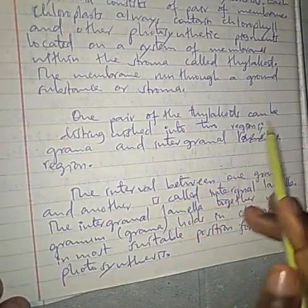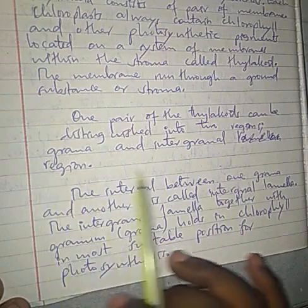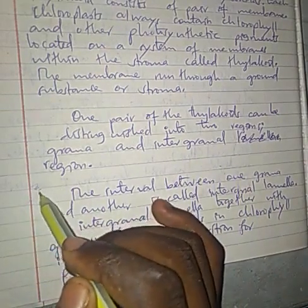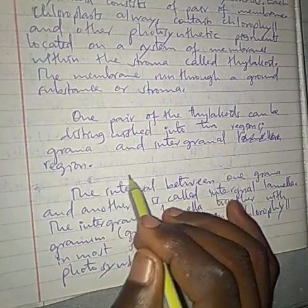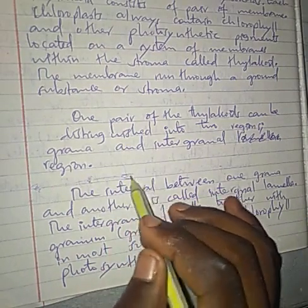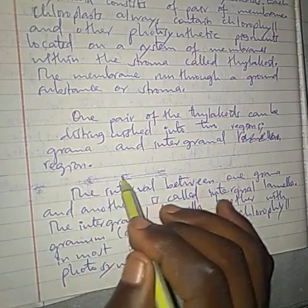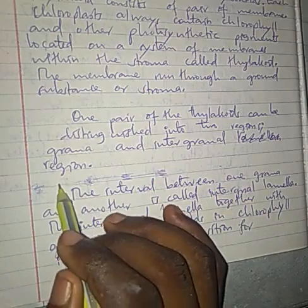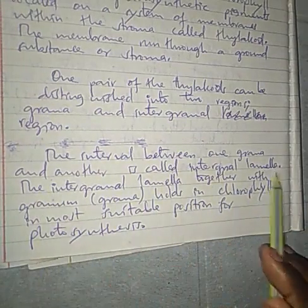One pair of thylakoids can be distinguished into two regions: the grana region and the inter-granal region. Grana is just like an accumulation of thylakoids. The inter-granal region is the region which connects one granum to another. The inter-granal lamella together with the grana hold chlorophyll in the most suitable position for photosynthesis.